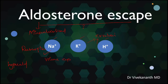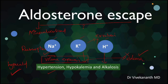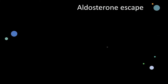Hypertension, increased excretion of potassium and hydrogen ions, causes hypokalemia and alkalosis respectively. Volume expansion in many conditions is associated with edema, but it's not present in primary hyperaldosteronism. So this observation of absence of edema despite having excess sodium reabsorption in primary hyperaldosteronism is termed as aldosterone escape.